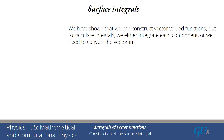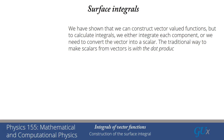We have two choices: either we construct an integral by integrating each component of the vector-valued function so that each component looks like a scalar, or we need a way of converting that vector-valued function into a scalar, which then becomes the argument of an integral we integrate with normal techniques. The traditional way to make scalars from vectors is with the dot product.